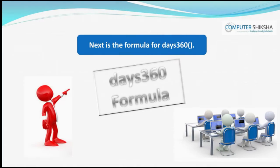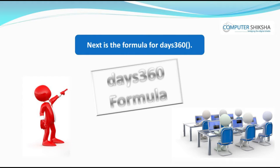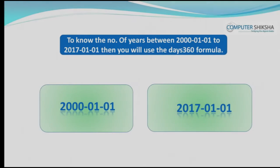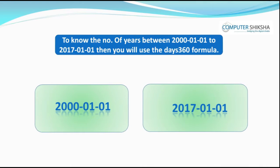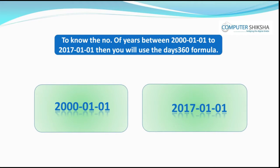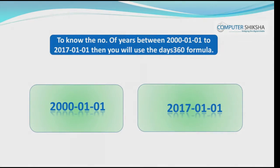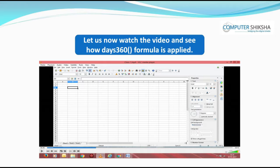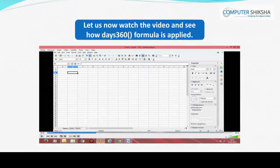The next formula is DAYS360. This will tell you how many years have gone by. For example, if you want to know how many years were between 2000-01-01 and 2017-01-01, you will use the DAYS360 formula. Let us now watch the video and see how =DAYS360() is applied.